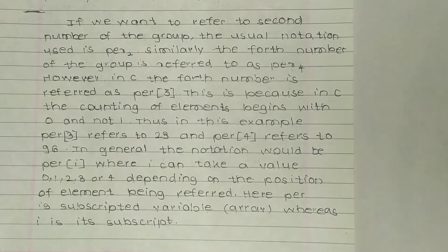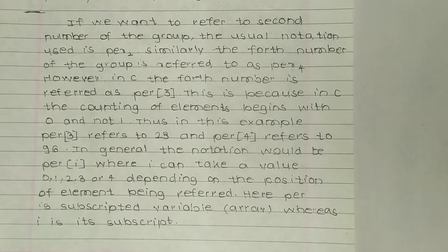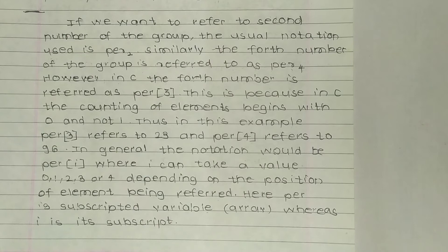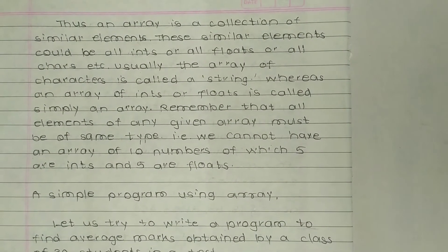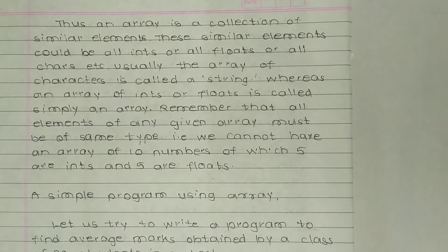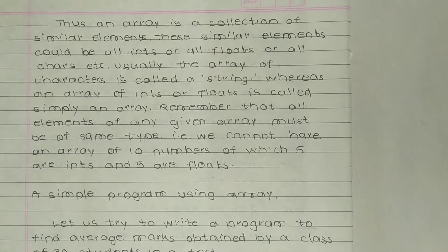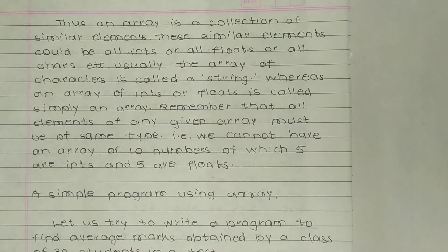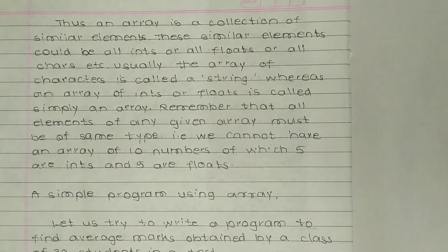Here 'per' is a subscripted variable, that is the array, whereas 'i' is its subscript. So 'per' is a subscripted variable and 'i' is its subscript. Thus an array is a collection of similar elements. These similar elements could be all ints, or all floats, or all chars, etc.